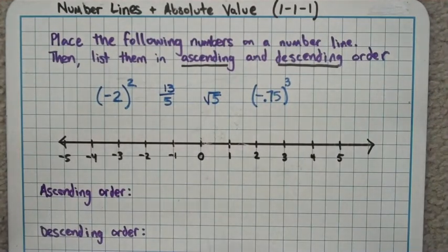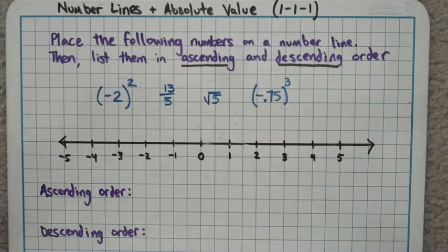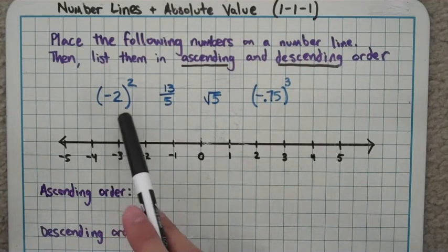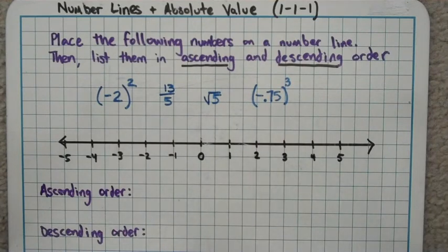This video is going to tell you about two concepts that are really important in terms of ordering numbers and understanding how numbers relate to one another. We're going to first talk about something called a number line. I gave you a list of numbers right here with four different numbers in it, and you're asked to put those numbers on a number line.